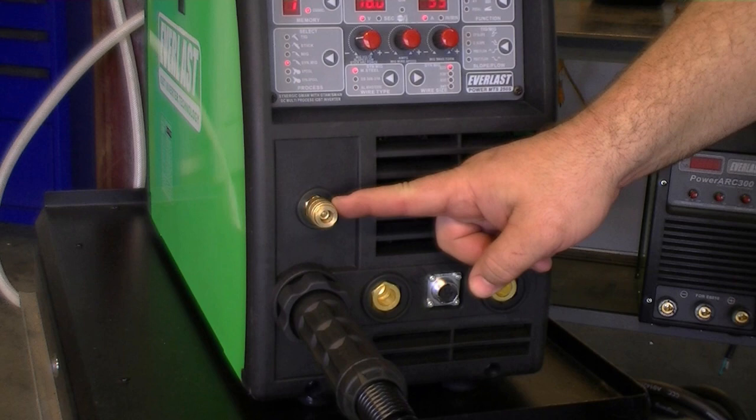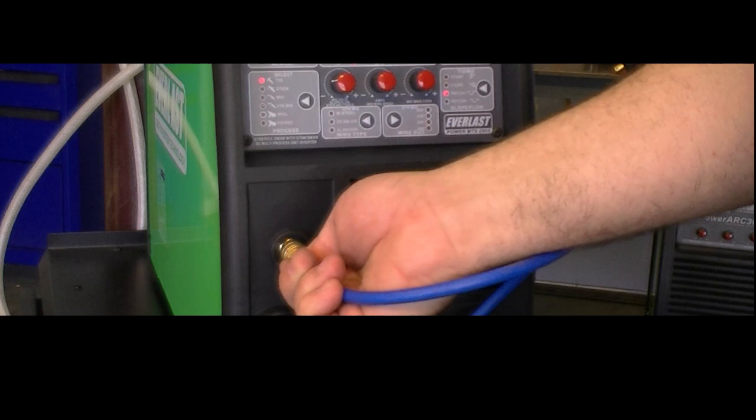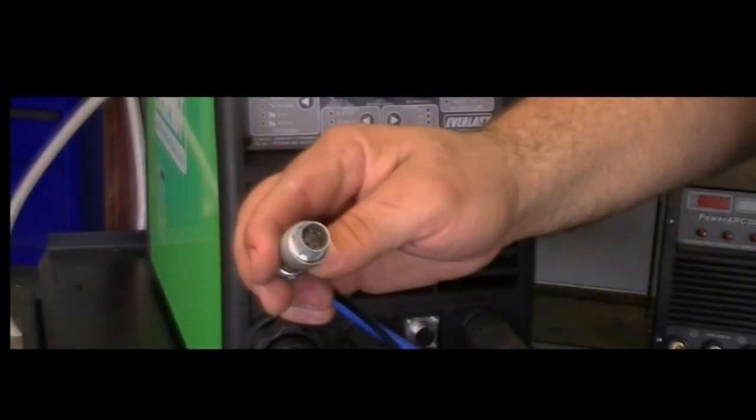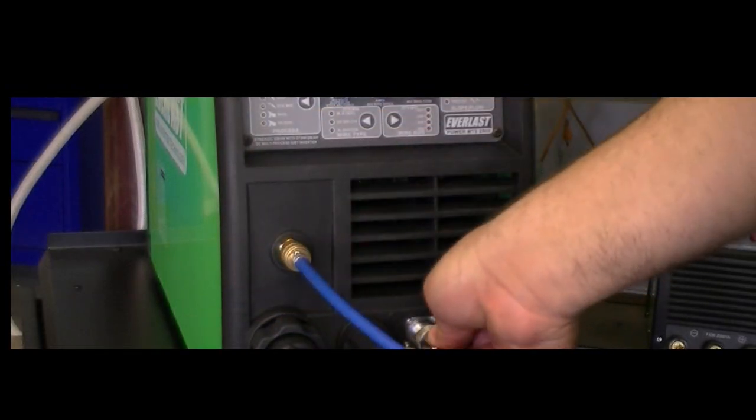Connect the TIG torch gas line to the quick connect mounted above the MIG connection. During MIG welding do not leave the TIG torch installed. Finally connect either the torch remote switch or the foot pedal to the seven pin connector. Tighten the coupling finger tight only.